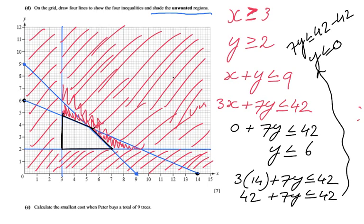The last question now. Calculate the smallest costs when Peter buys a total of nine trees. So they tell you he's buying nine trees. And what is the smallest amount of money he has to pay for that? Well, perhaps you remember of the previous part.